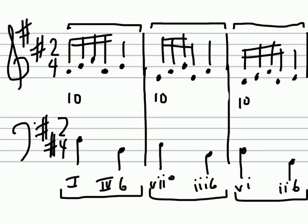Notice in this particular case we have all three of these things going for us: we've got a melodic sequence, we've got a linear intervallic pattern — the ten-six, ten-six — and we've also got a harmonic sequence of descending fifths from chord to chord. It's common for several of these elements — the melodic sequence, the linear intervallic pattern, and the harmonic sequence — to all happen together in the same pattern.